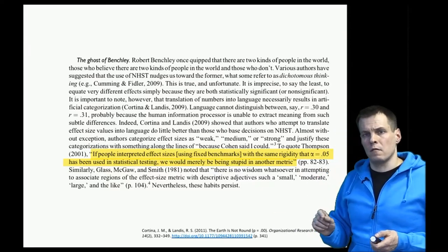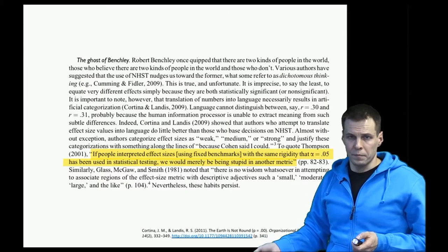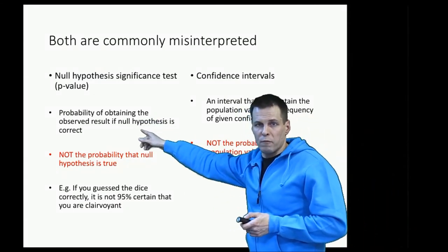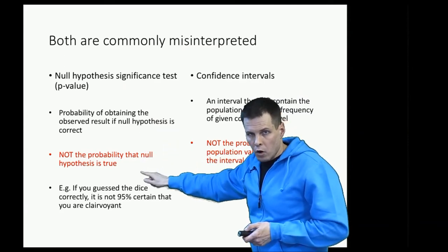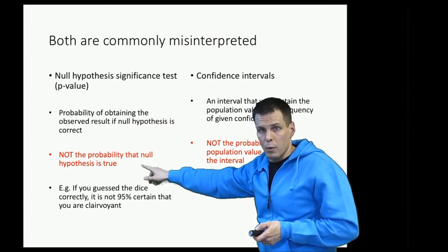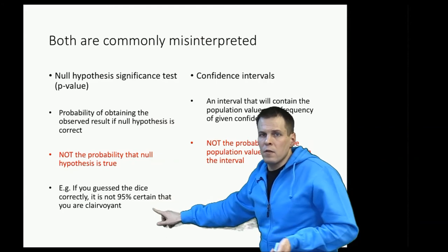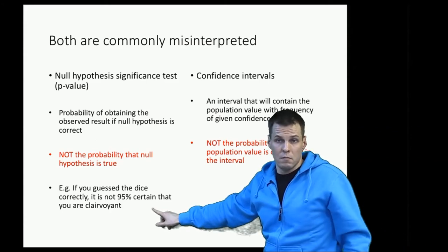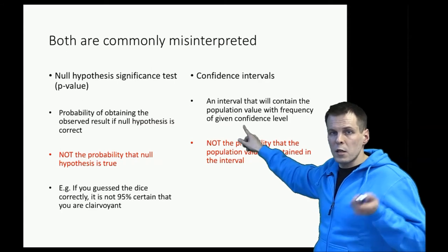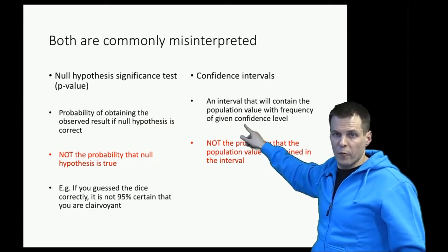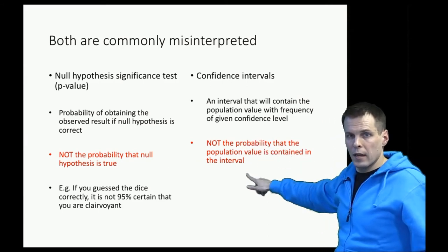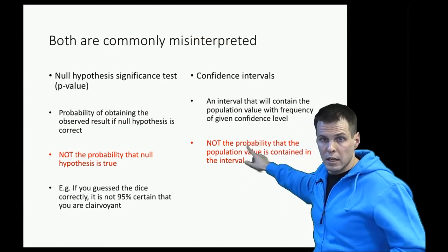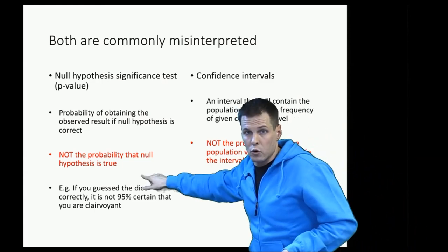The problem with confidence intervals and p-values is that both are commonly misinterpreted. The p-value is the probability of obtaining the observed result if the null hypothesis is correct. It is not the probability that the null hypothesis is correct. I will explain that more in another video. If you guessed a die that is thrown correctly, it doesn't mean that you're clairvoyant. You could guess a die randomly. Confidence interval is an interval that will contain the population value with frequency of given confidence level. It is not the probability that the population value is contained within a particular interval. That's a different thing. Understanding why these two are not the same is a bit more complicated, so I will not cover that, but we will take a look at this in more detail.